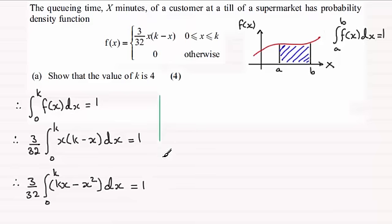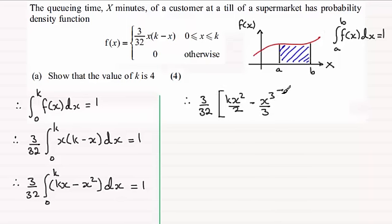So if we just border that off there, we've therefore got 3 over 32. And now we can integrate the first term here. That's going to be kx squared over 2. And for the second term, it's just going to be minus x cubed over 3. And so put that in square brackets and then add the limits to that. That's going from 0 to k, and it's going to equal 1.